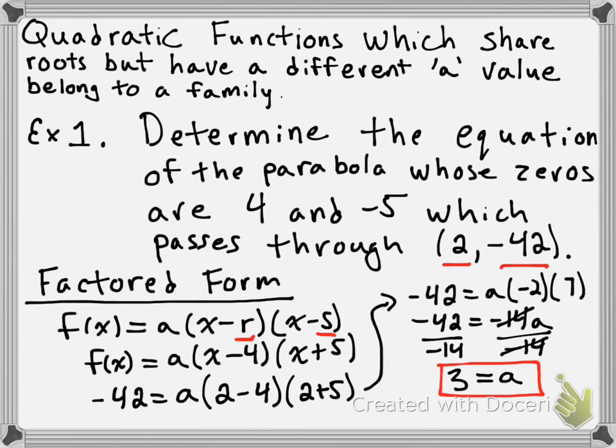Now, because the only thing that differs between the different parabolas in this family is the a value, we now actually have enough information to specify the exact equation of the parabola that we want. So it's going to be the equation of the parabola that follows this form here, f(x) = a(x - 4)(x + 5), but we're going to substitute 3 in for a.